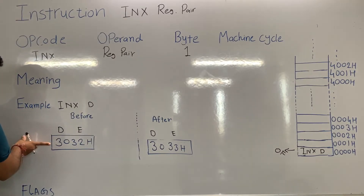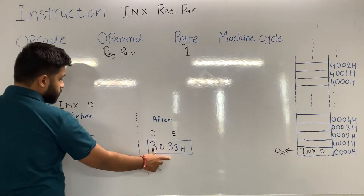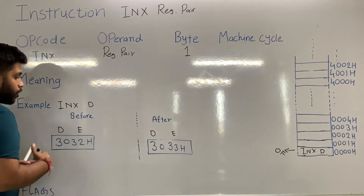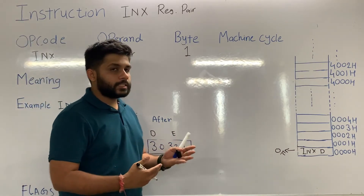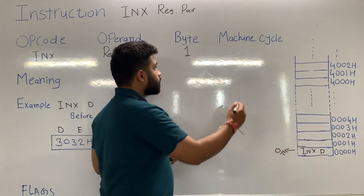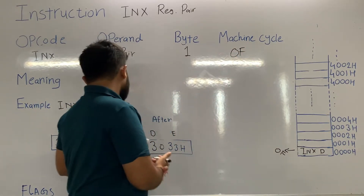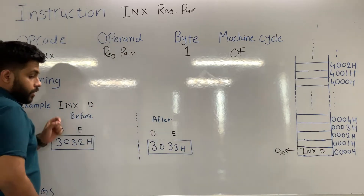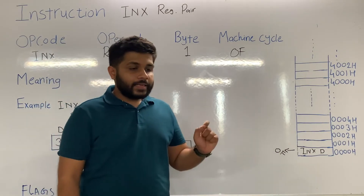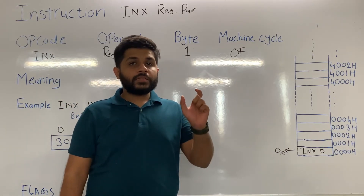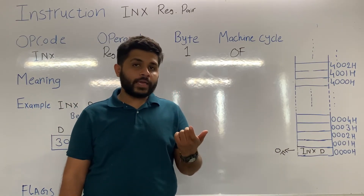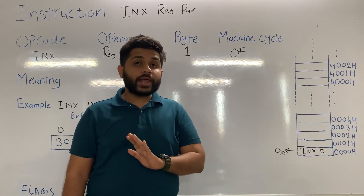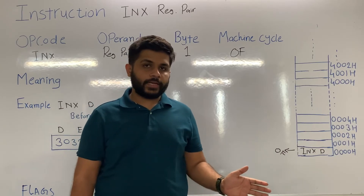During the execution, the content of the DE pair is incremented and stored in the same register pair. No interaction with memory or I/O devices is done during execution, so only one machine cycle is created — the opcode fetch. Since INX increments a 16-bit value by one, no flags will be affected.